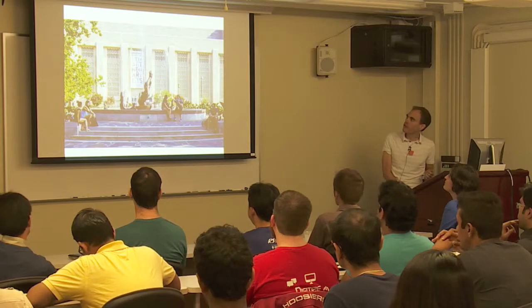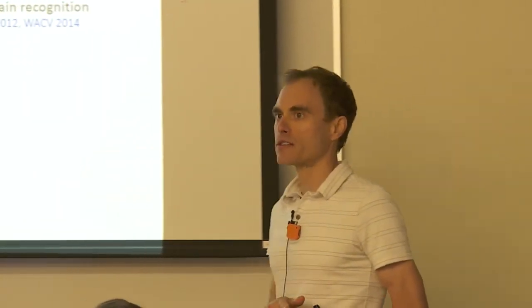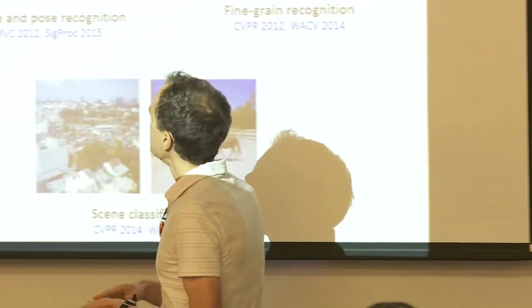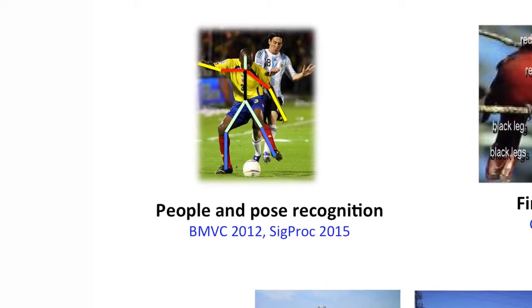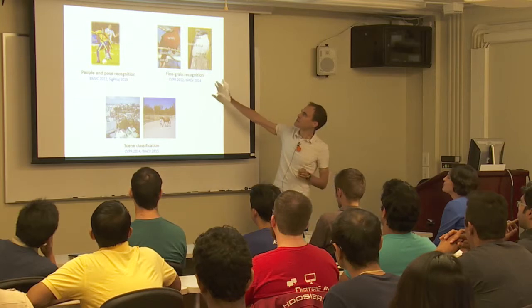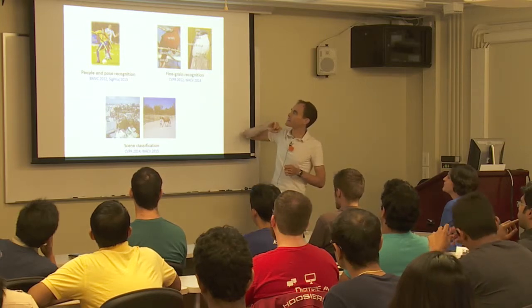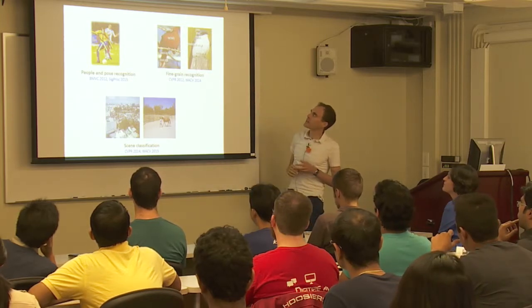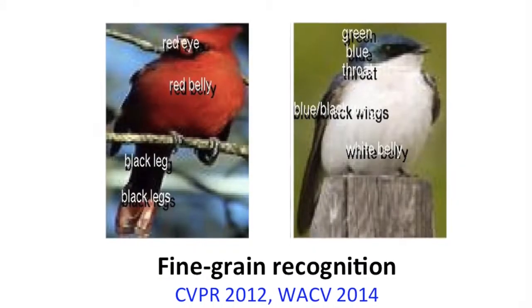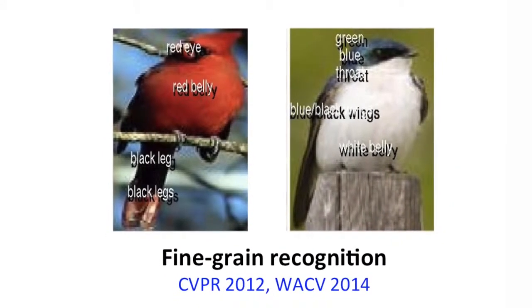On one hand we work on very basic building blocks that are useful potentially across a range of applications like detecting people in images and figuring out what they're doing, or detecting particular species and particular classes of objects including even really hard recognition problems like particular species of birds and differentiating between them.